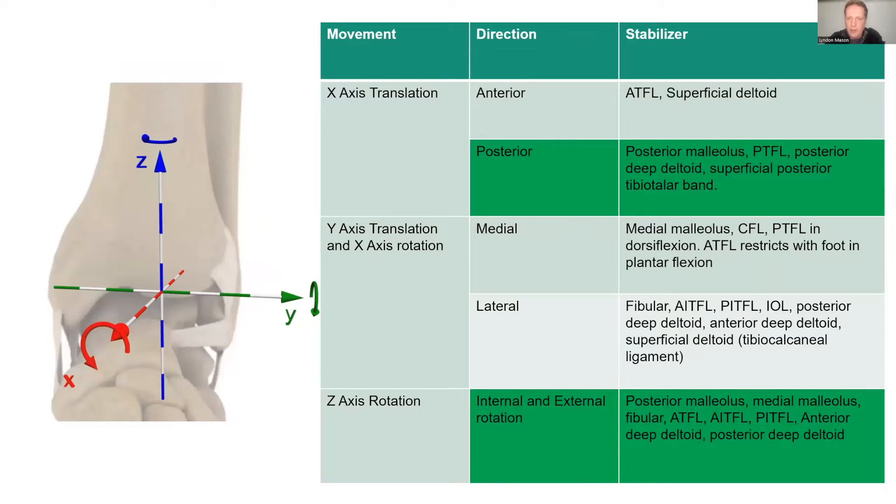You can see here the green box on the bottom—this is where the posterior malleolus fits in. It fits into both your X-axis translation and Z-axis rotation. Some more recent biomechanical studies now are showing that the small fragments that we used to just ignore are very important for rotation, and if you leave these alone without fixation, they can cause problems.